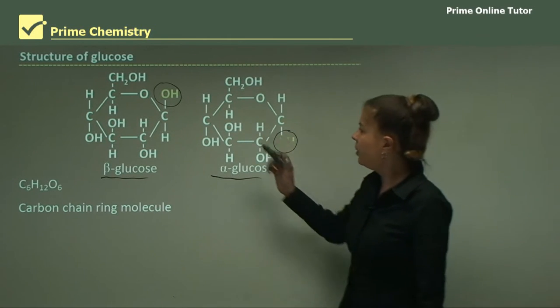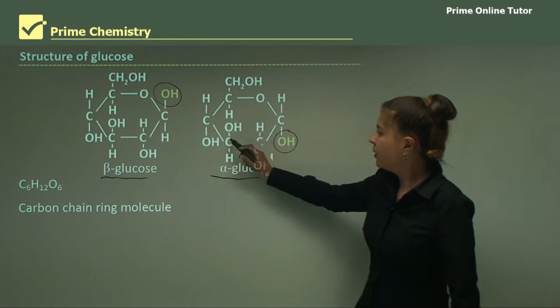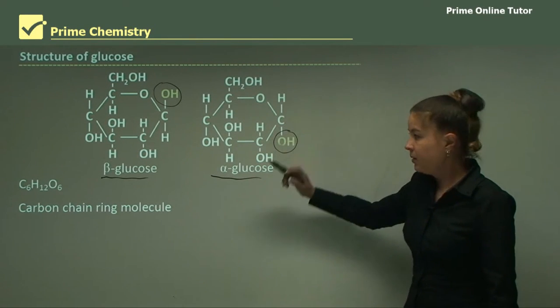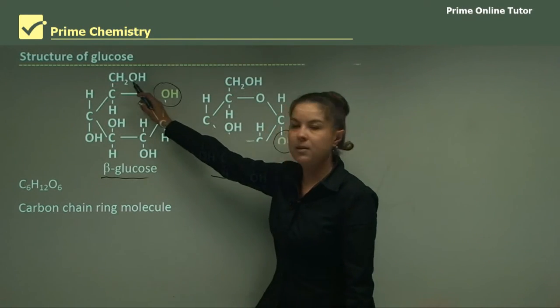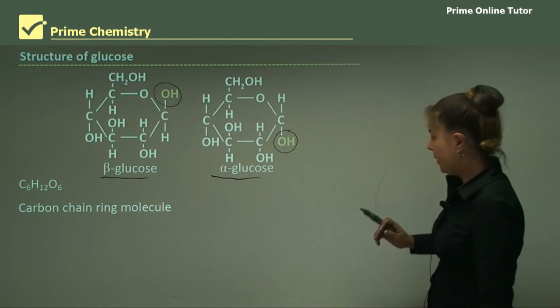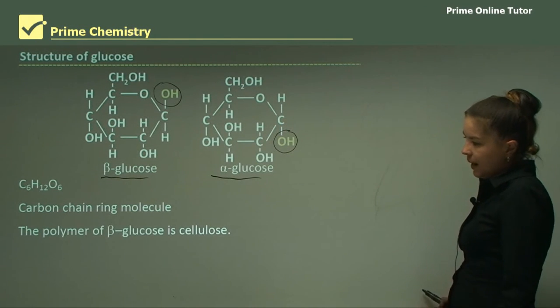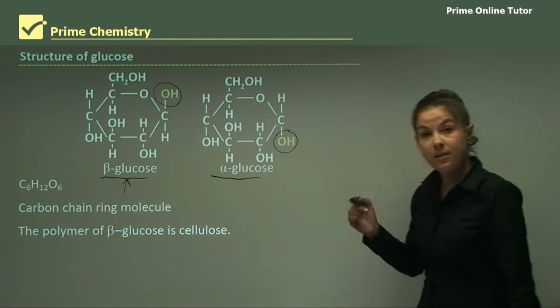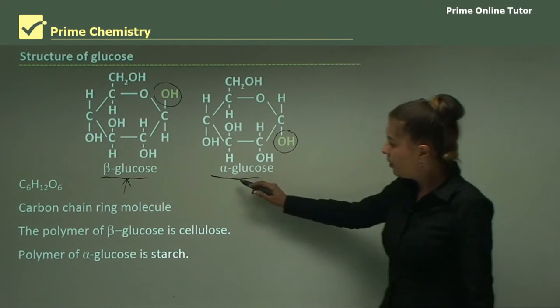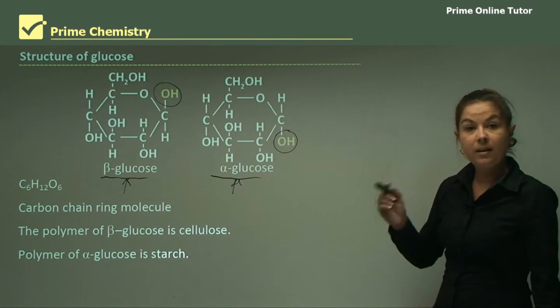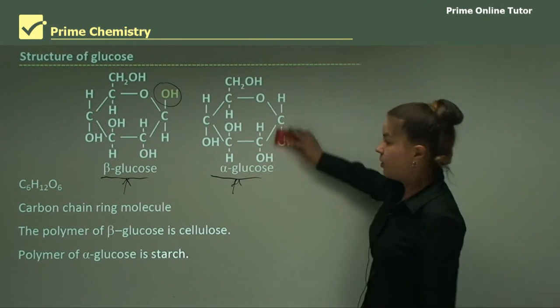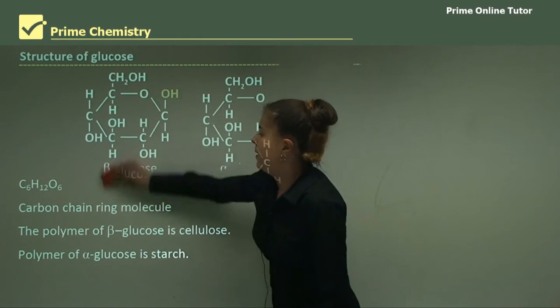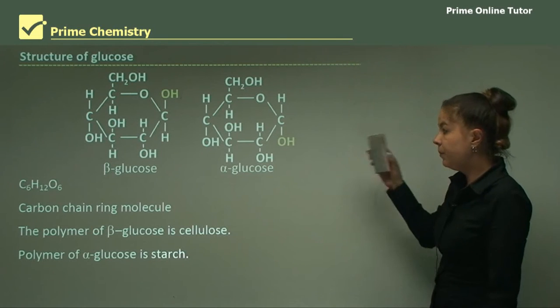It's a carbon chain ring molecule. As you can see, there's one, two, three, four, five, six carbons. Don't forget that there's a CH2OH group up here. The polymer of beta glucose, this one is cellulose. And the polymer of alpha glucose is starch. Cellulose and starch are quite different molecules. So the bonding there and the positioning of the functional group is quite important.